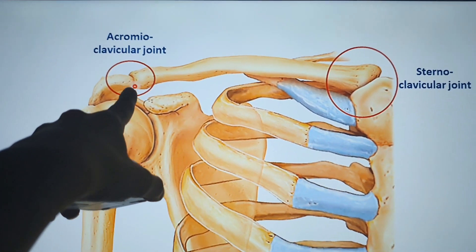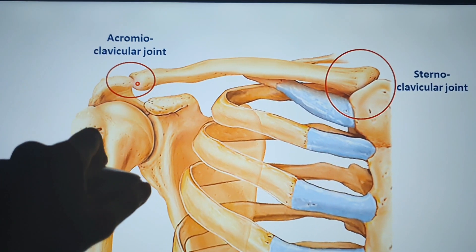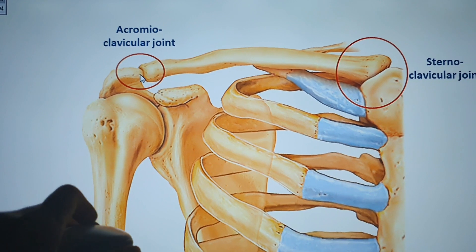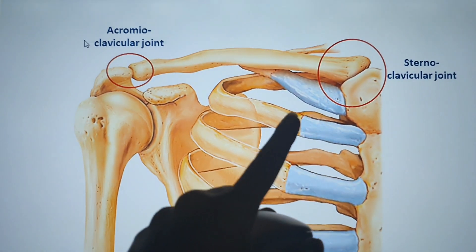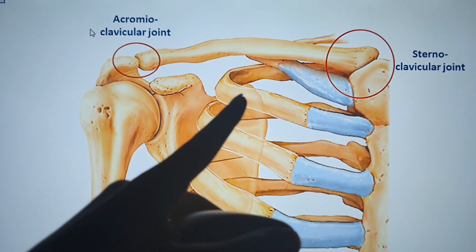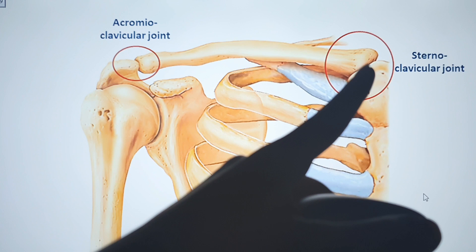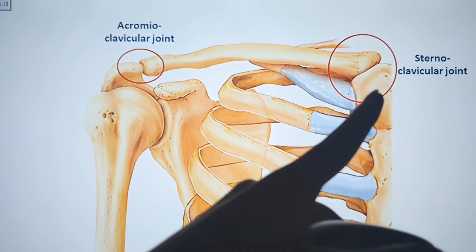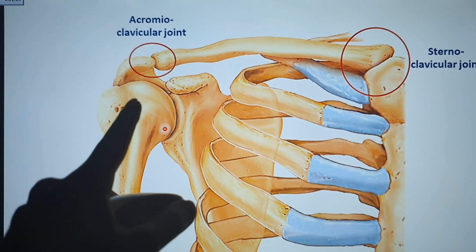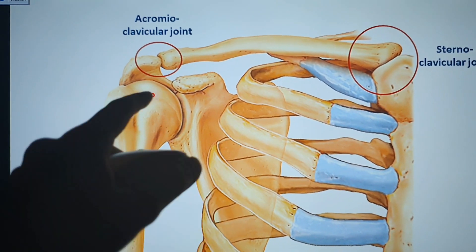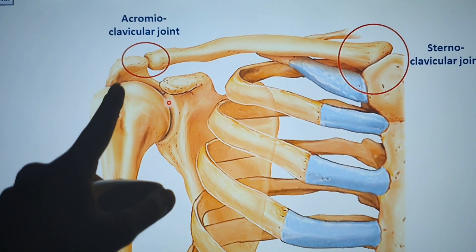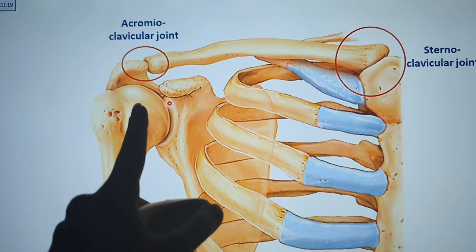Fractures can occur at the acromioclavicular joint. The sternoclavicular joint connects to the sternum. The shoulder joint is called the glenohumeral joint — it is a ball-and-socket joint.